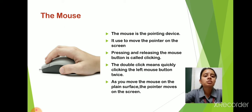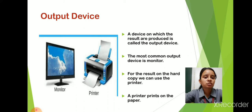Now, next is output devices. What is output device? The devices that give the result after the process are called output devices. The most common output devices are monitor and printer. Monitor shows us output on the screen and printer prints the output on paper.